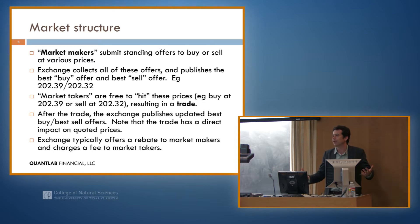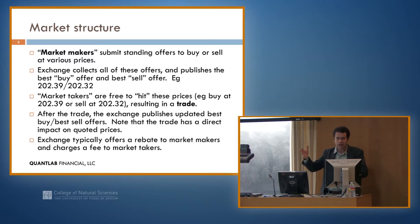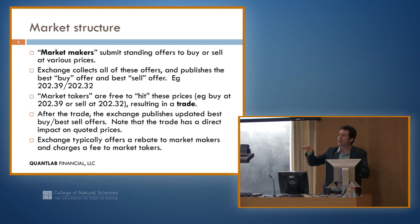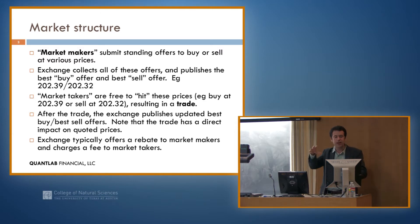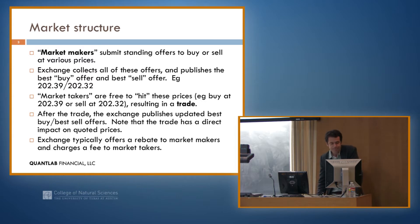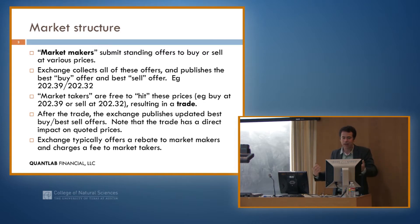You get this whole collection of offers, and the exchange needs to combine them all into a combined best offer. They look at all the different offers and say: this is the best price for buying, and this is the best price for selling. Then they publish that information. For example, maybe the best price for some stock is you can buy it at $202.39 and sell it at $202.32. Other people come into the market and hit those prices — they'll say, okay, I'll take you up on that offer and buy that stock at $202.39.